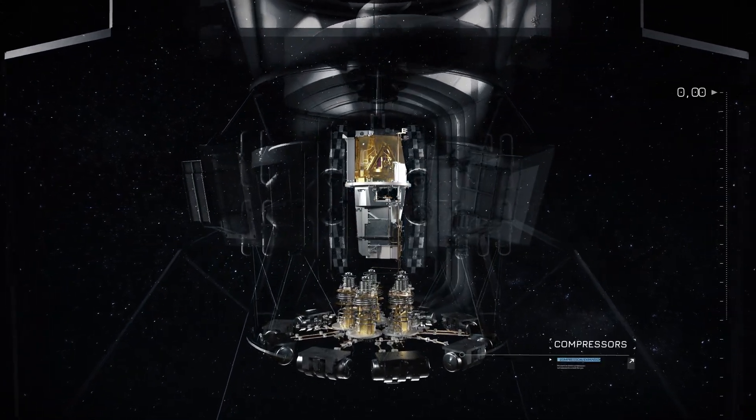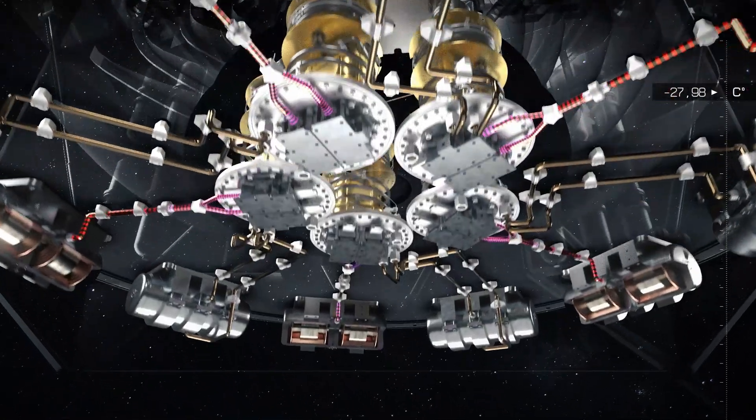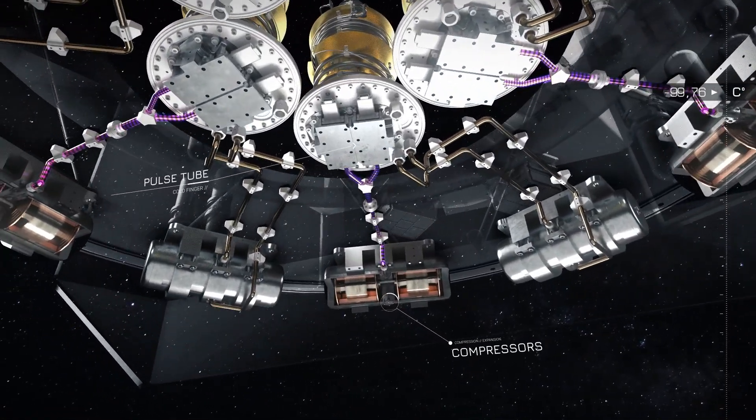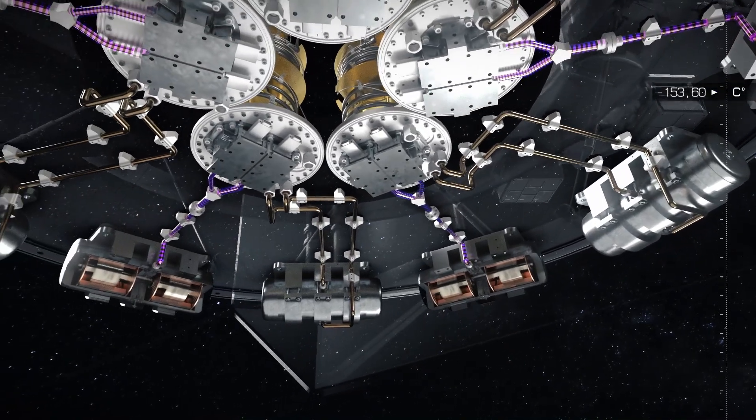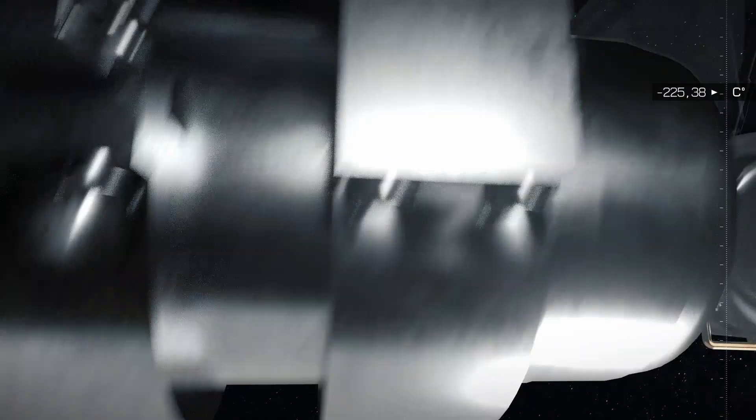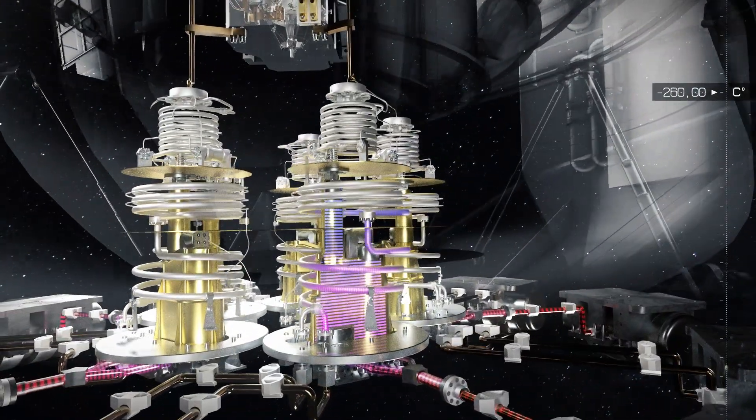The first technological solution in the chain uses pulse tubes operating with helium. A compressed gas heats up, then cools down during its expansion. By repeating this cycle dozens of times per second, the temperature drops to minus 260 degrees Celsius.